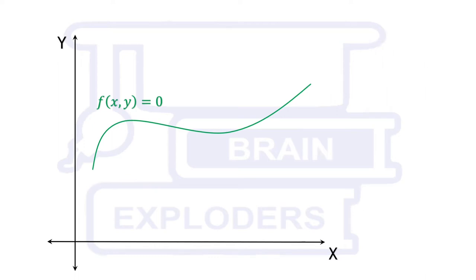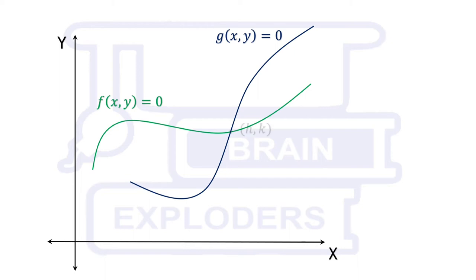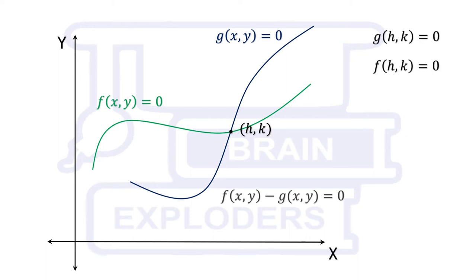Let there be another curve g(x,y) = 0 which intersects the previous curve at a point (h,k). Since (h,k) lies on both curves, it satisfies both equations — that means g(h,k) and f(h,k) are both zero. If we draw one more curve f(x,y) minus g(x,y) = 0, then (h,k) satisfies this curve also, because f(h,k) and g(h,k) are both simultaneously zero.